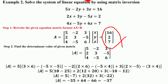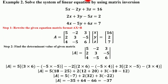After rewriting the equations in matrix format, we find the determinant of matrix A = [5, −2, 3; 2, 3, −5; 4, −5, 6]. The determinant value is −37.